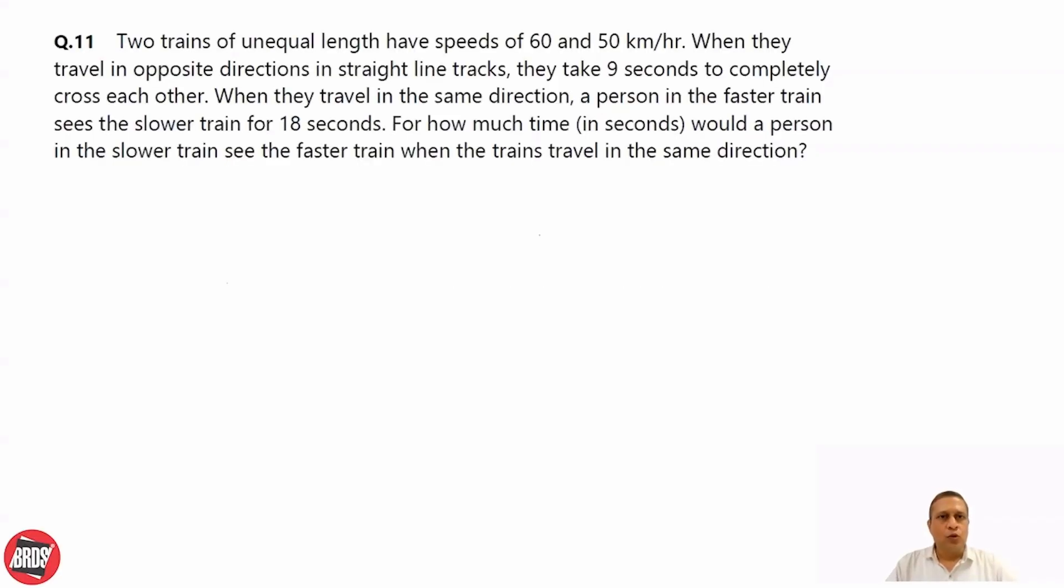Now in this question, two trains of unequal length have speeds 60 and 50 km/h. When they travel in opposite direction, they take 9 seconds to cross each other. So when they travel opposite, the time required to cross each other is 9 seconds.